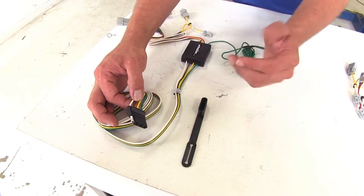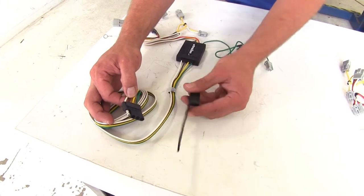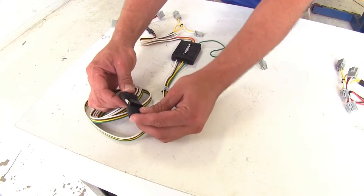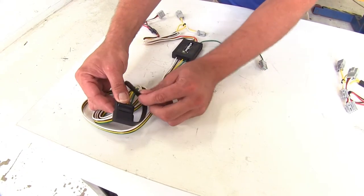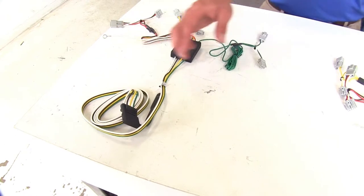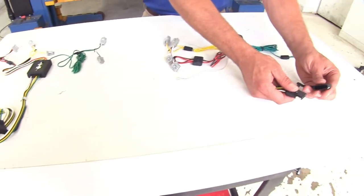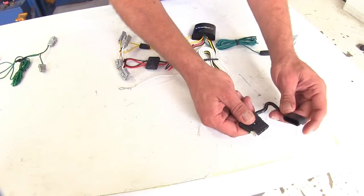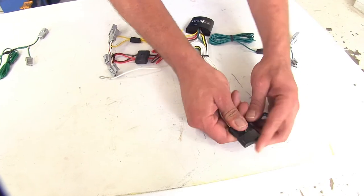You can see the CURT has a removable dust cover that slides around the wiring down here and clips over, while the Tekonsha is a little bit different. It's going to stay permanently attached and it'll come around like that.